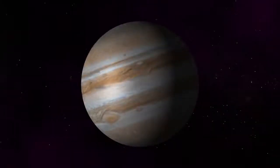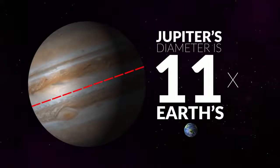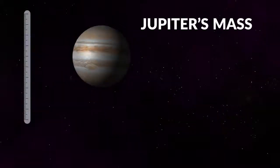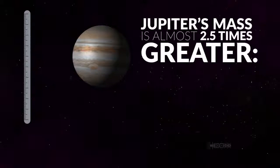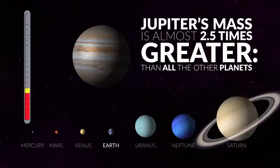Jupiter's physical parameters are impressive. Its diameter is approximately 11 times larger than Earth's. Its mass is almost two and a half times greater than Mercury, Mars, Venus, Earth, Uranus, Neptune, and Saturn combined.